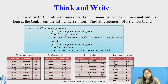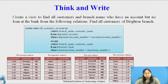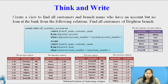Consider the first part: create a view to find all customers and the branch name who have an account but no loan at the bank. The query is: CREATE VIEW all_customer_account AS SELECT branch_name, customer_name FROM depositor, account WHERE depositor.account_number = account.account_number EXCEPT SELECT branch_name, customer_name FROM borrower, loan WHERE borrower.loan_number = loan.loan_number. The relation all_customer_account with the attributes branch_name and customer_name is shown on this slide.